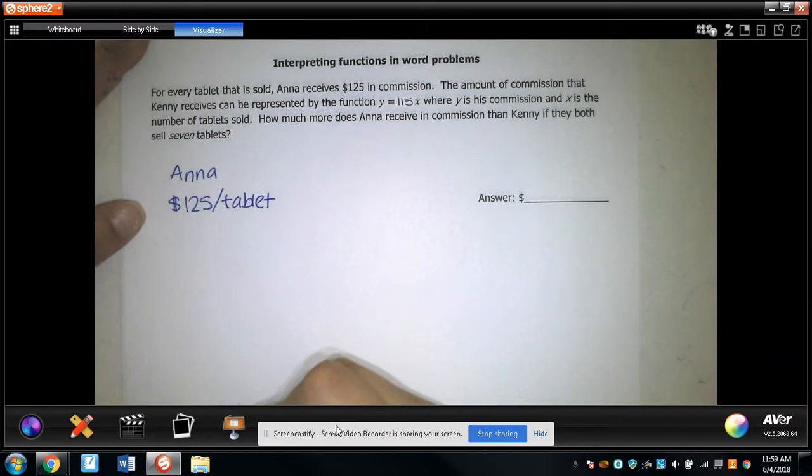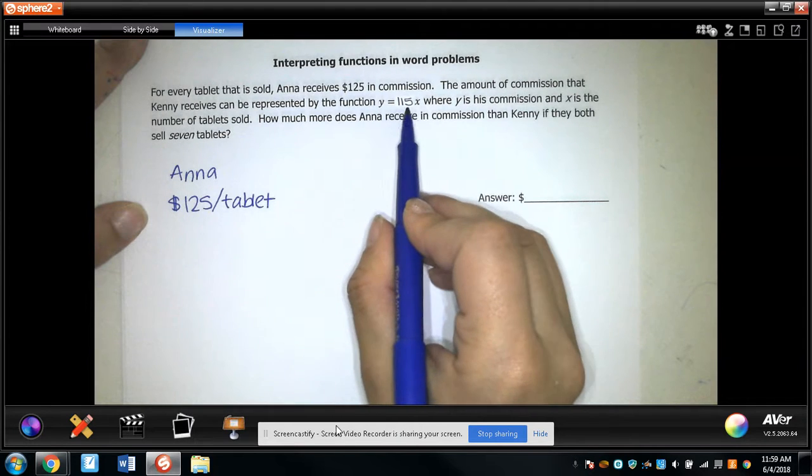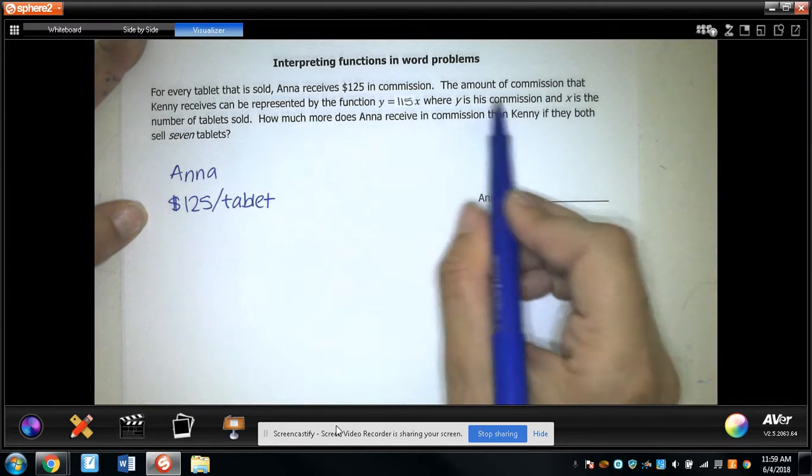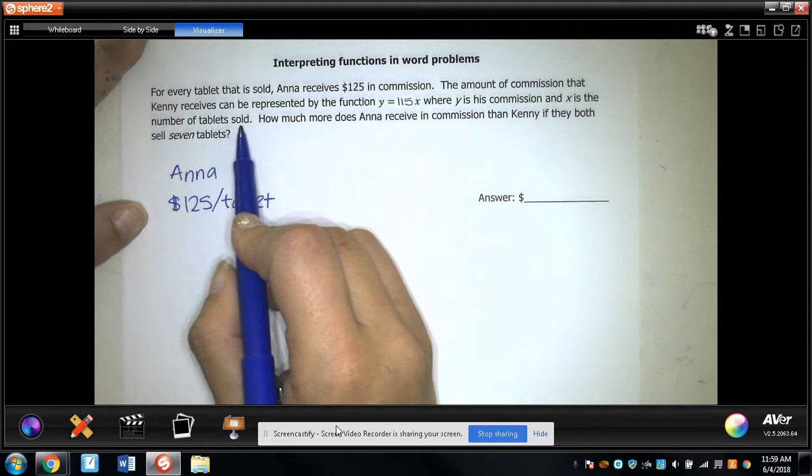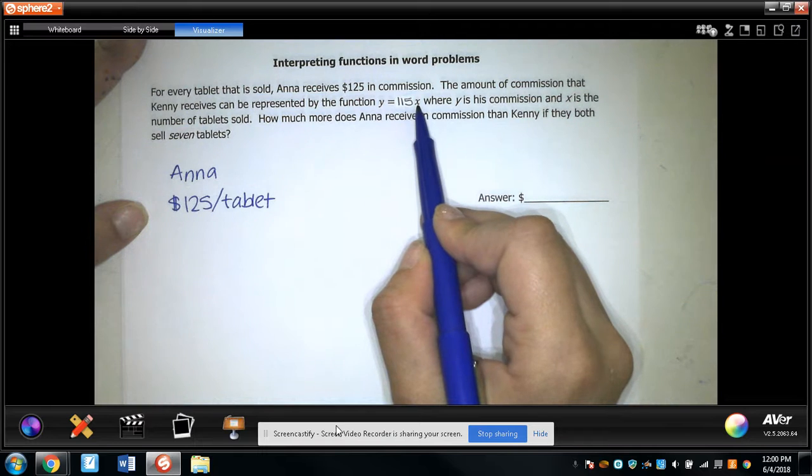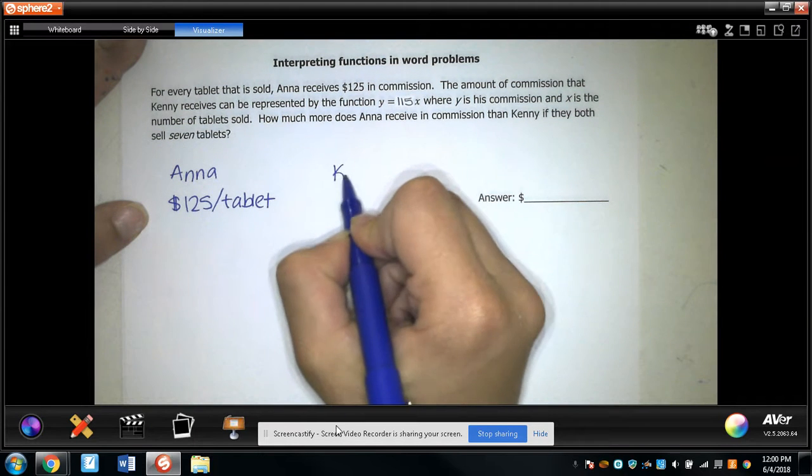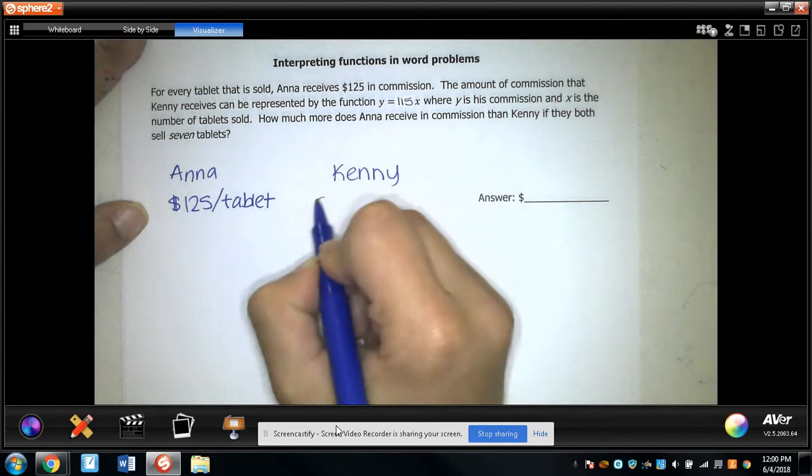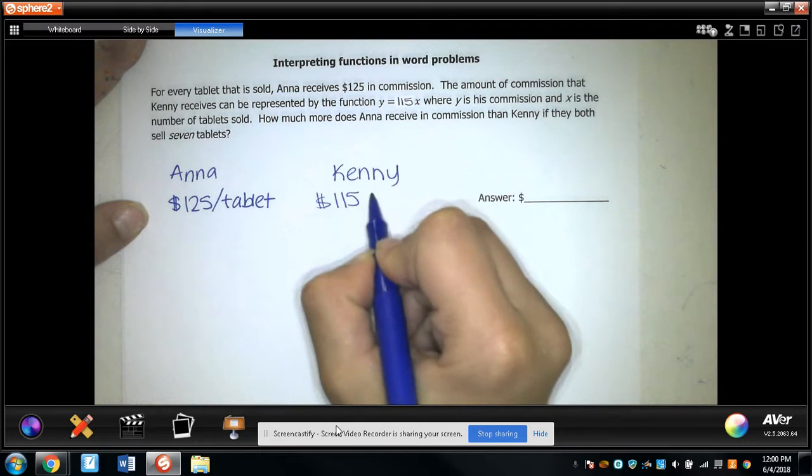The amount of commission that Kenny receives can be represented by the function y equals 115x, where y is his commission and x is the number of tablets sold. So that means his commission is $115 per tablet. So I'm going to write that down. Kenny gets $115 per tablet.